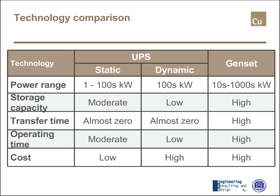These are different technologies with different pros and cons. Static UPS covers a very large power range, from nominally one kilowatt to some hundreds of kilowatts. Dynamic UPS are available from around one hundred kilowatts, or probably two or three hundred. Gensets are available from tens of kilowatts to some megawatts. The storage capacity is high for static UPS, low for dynamic UPS, and theoretically infinite for gensets.